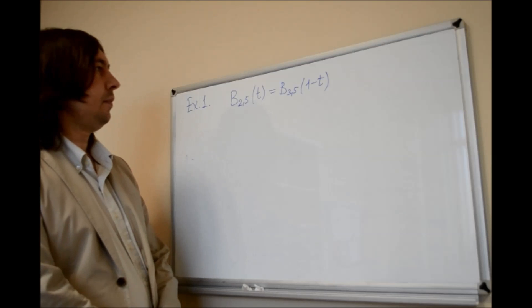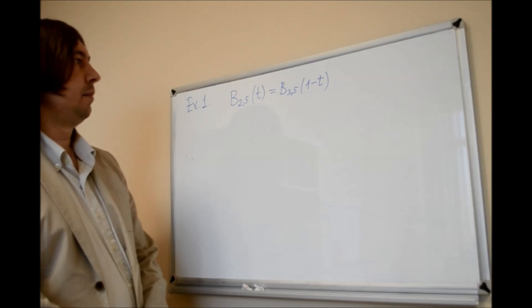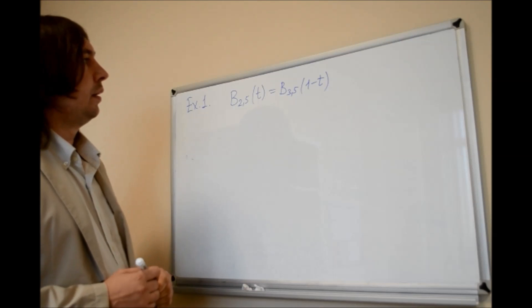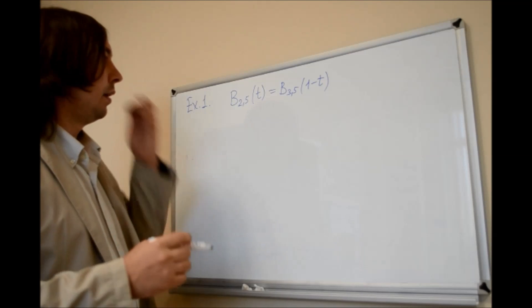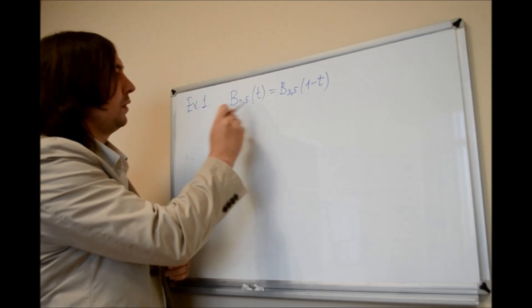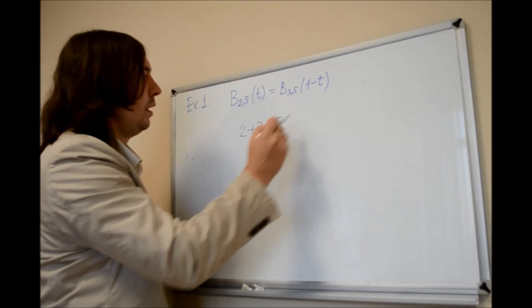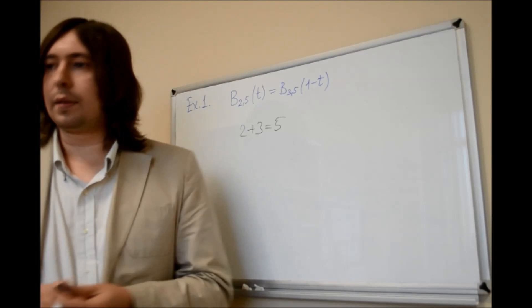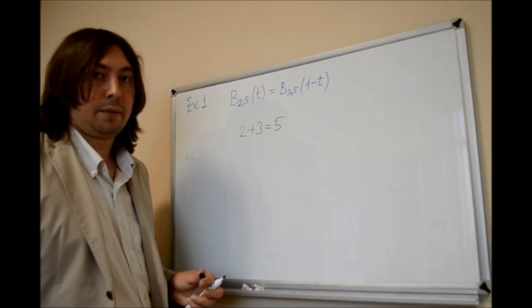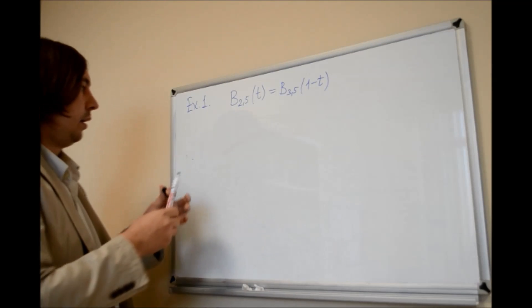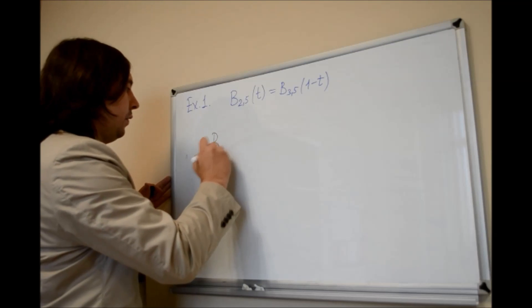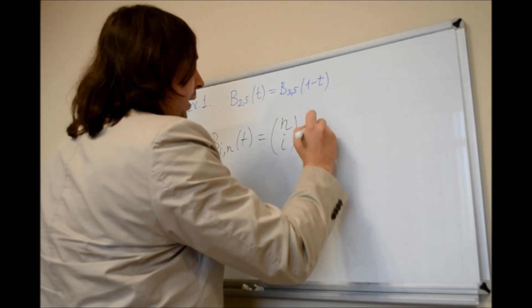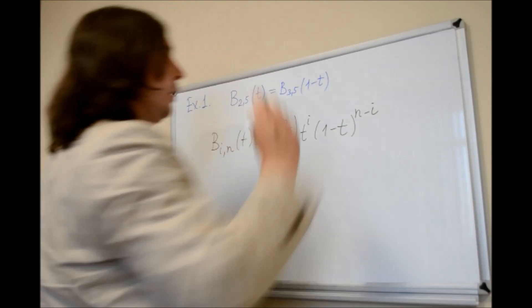This is example number 1. We should show using symmetric property that b_2,5 of t equals b_3,5 of 1 minus t. From the previous slide, you can find the first property: if the sum of the first indices like 2 plus 3 is equal to n, here 5, then this relation holds. Let's compute these values separately and see if they are equal.